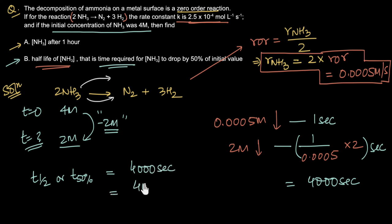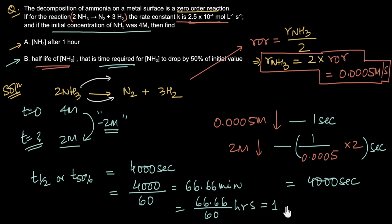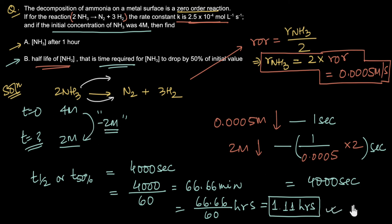Converting: 4000 seconds ÷ 60 = 66.67 minutes, and 66.67 ÷ 60 = 1.11 hours. So the time required for the concentration of ammonia to drop by 50% — from 4 molar to 2 molar — is 1.11 hours.